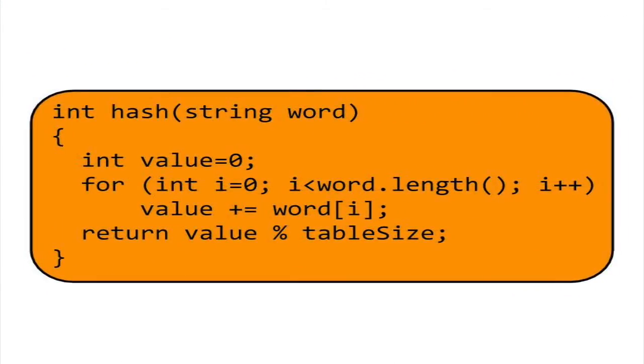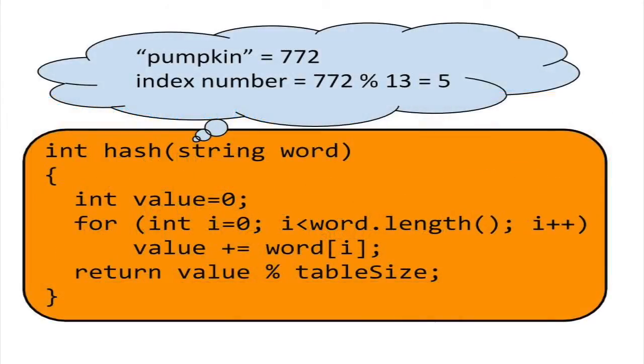Here's an example. Suppose the hash function takes a string as its parameter, and then it adds up the ASCII values of all the characters in the string. Then it mods the sum of these ASCII values by the table length. If the key is a word like pumpkin, and the table is the length of 13, then the resulting index number would be 5.